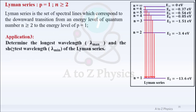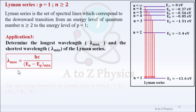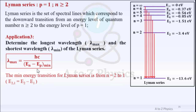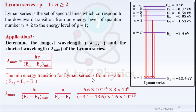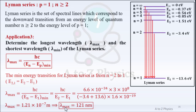Lyman series: Determine the longest wavelength λmax and shortest wavelength λmin. Lambda is maximum when EN minus EP is minimum. The minimum energy transition of the Lyman series is from N = 2 to N = 1. So λmax = Hc/(E2 − E1). Substituting the values, we get λmax = 1.21×10⁻⁷ m, which equals 121 nanometers.